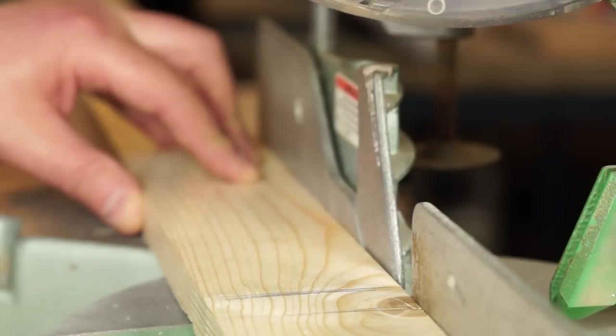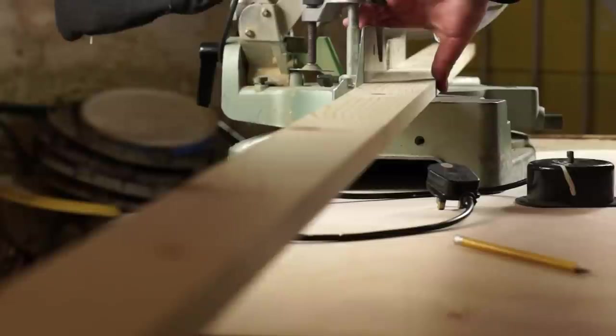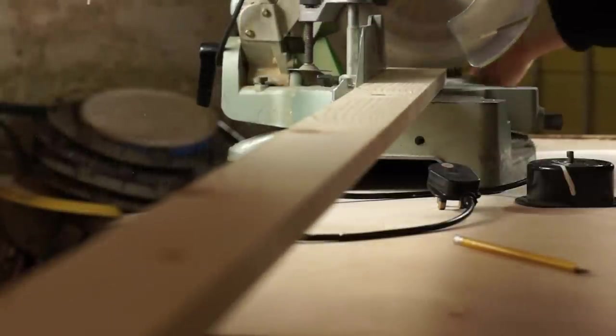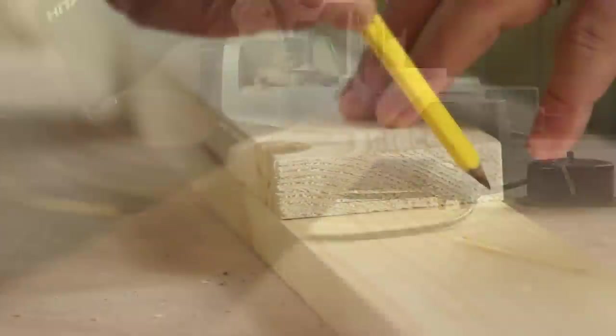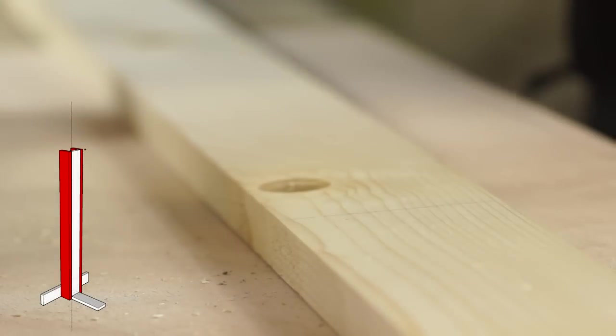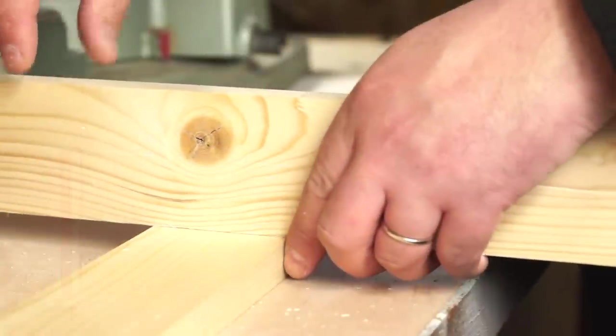Then mounted in the chop saw I can cut it to length. To make the sides I can use the front as a measure and add to the length the thickness of the timber.